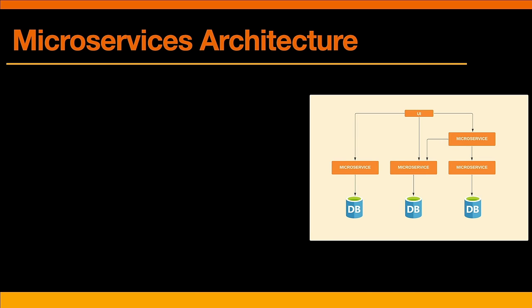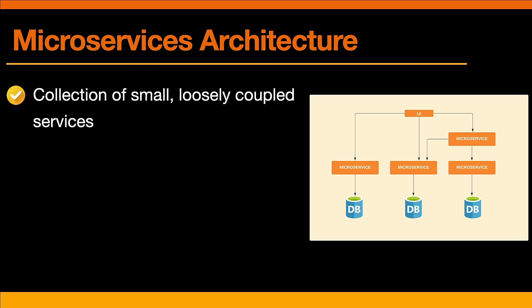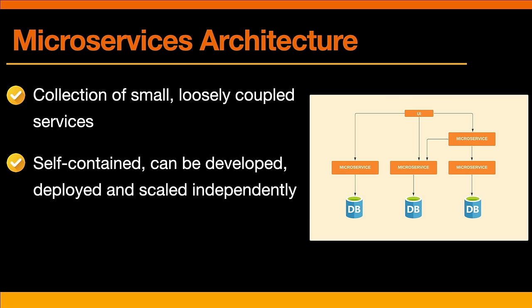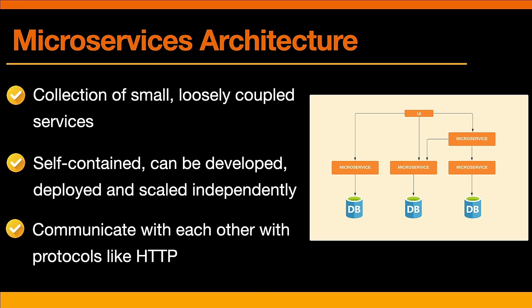So now that we know what monolithic architecture is, let's talk about microservices. In a nutshell, they structure an application as a collection of small, loosely coupled services that focus on specific business functions. Each service is self-contained and can be developed, deployed, and scaled independently. For instance, you may have a service that handles user authentication, another that handles user profiles, and another that handles the product catalog. These microservices can communicate with each other over a network using protocols like HTTP, and you can use a load balancer to distribute incoming requests evenly.